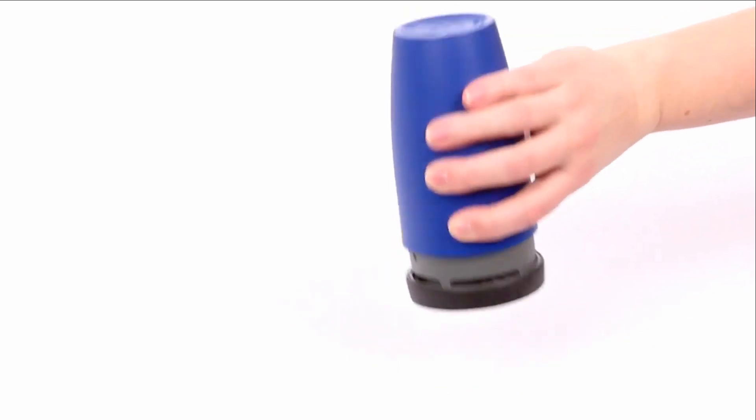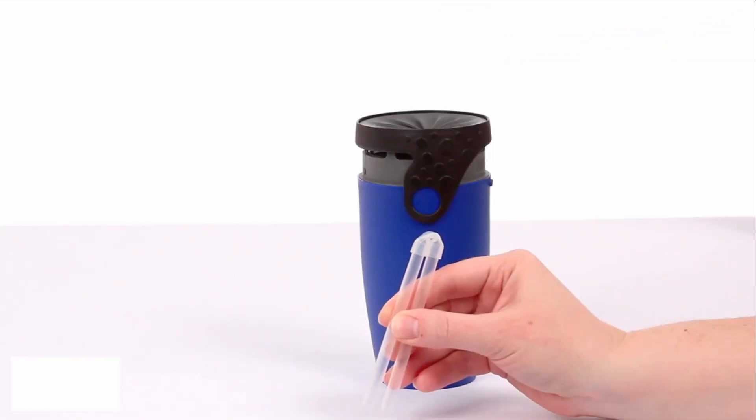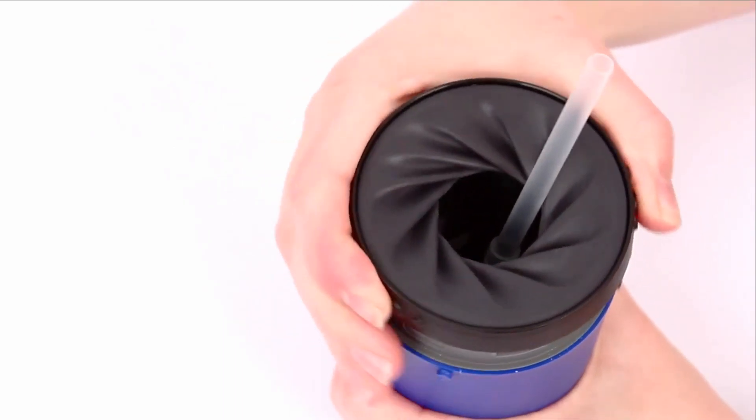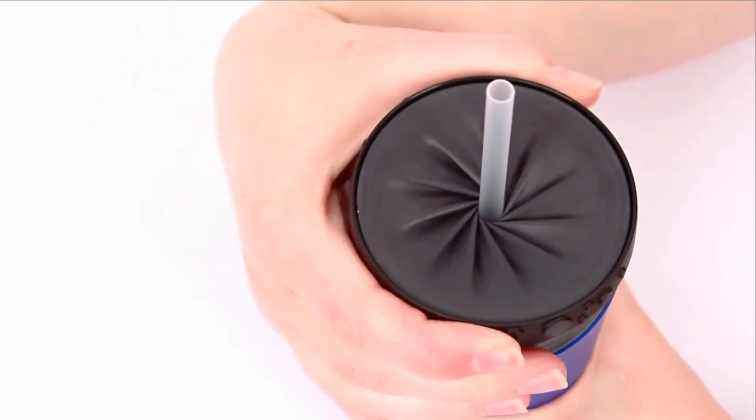With it closed, the tumbler becomes spill-proof. A removable plastic straw is also included for your convenience, and the silicone membrane conforms to the straw's shape to help prevent spills.